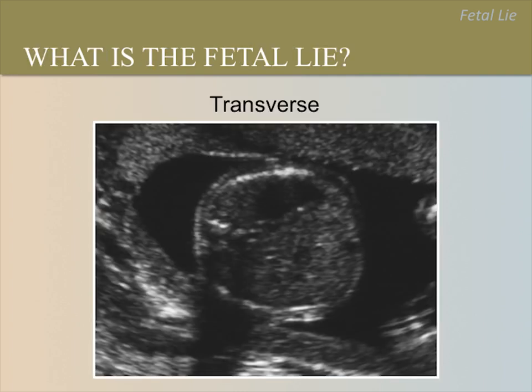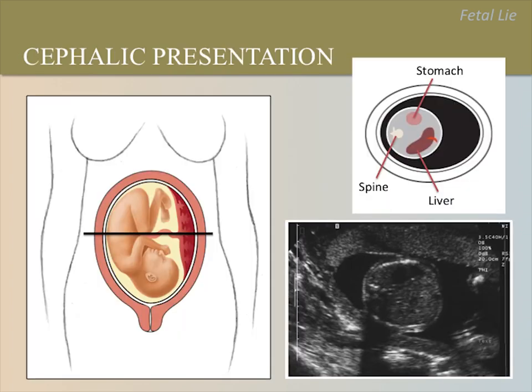What is the fetal lie and presentation in this case? Note that this image is in the transverse plane. Please pause the video to encourage responses. Here we can see the fetal stomach and fetal spine. This illustration shows that the fetus has a longitudinal lie and cephalic presentation with the fetal spine on the maternal right. Please ask your trainer to demonstrate this fetal lie with a doll prop and compare the structures in the drawings with the structures on ultrasound.